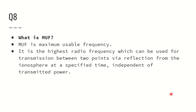What is MUF? MUF is Maximum Usable Frequency. It is the highest radio frequency which can be used for transmission between two points via reflection from the ionosphere at a specified time, independent of the transmitter power. Remember: transmission between two points, via reflection from the ionosphere, at a specified time, which is independent of transmitter power. This is a very important question.